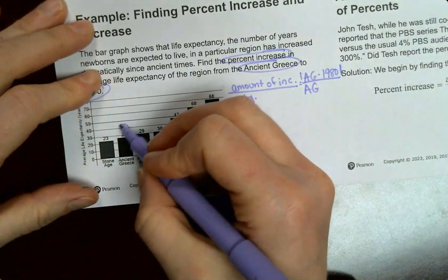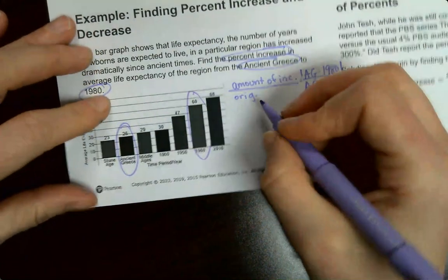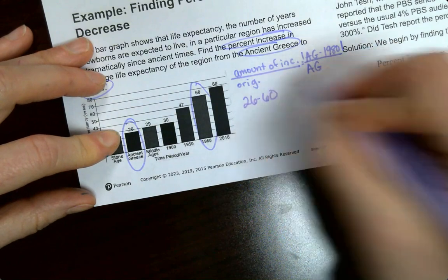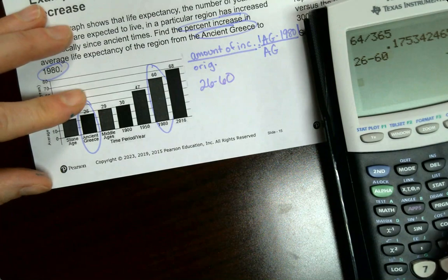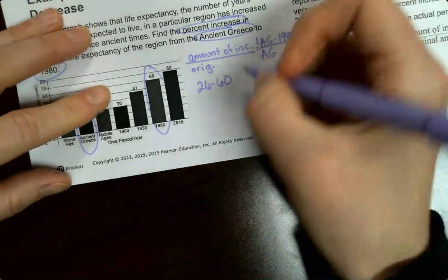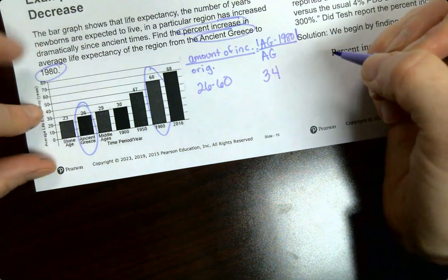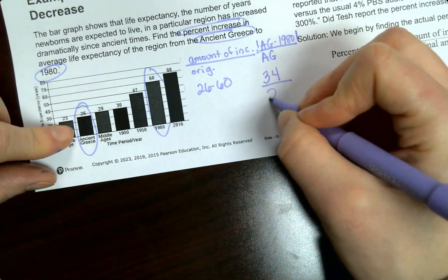So you can do the absolute value bars, or you could flip it around. This just means whatever answer I get, I'm going to make it positive. So ancient Greece, right here, 1980s is right here. So we want to find what the change is. 26 minus 16. So it's 34. So the amount of increase is 34 years over what our original was, 26.